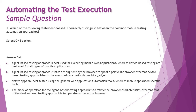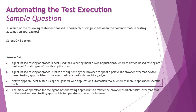Option D: the mode of operation for agent-based testing approach is to mimic the browser characteristics, whereas device-based testing approach is to operate on the actual browser. That is also correct — the agent-based approach mimics the browser, whereas device-based runs on the actual browser within the device. So the right answer is C: native apps are best tested using general web application automation tools whereas mobile apps need specific tools — that's vice versa and incorrect.